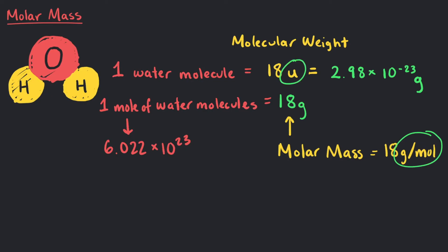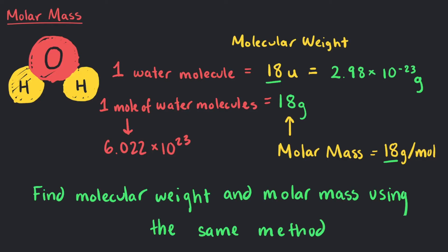Yet since the number of 18 remains the same, we can find the molecular weight and molar mass using the same method. The molar mass of something in grams per mole will have the same value as the molecular weight of that thing in atomic mass units, U.